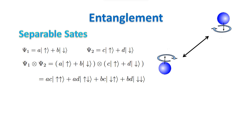Each basis vector of the two-particle composite system is the tensor product of two basis vectors, one from each component. In our case, the state of the composite system is given by the following four basis vectors: up-up, up-down, down-up, and down-down.